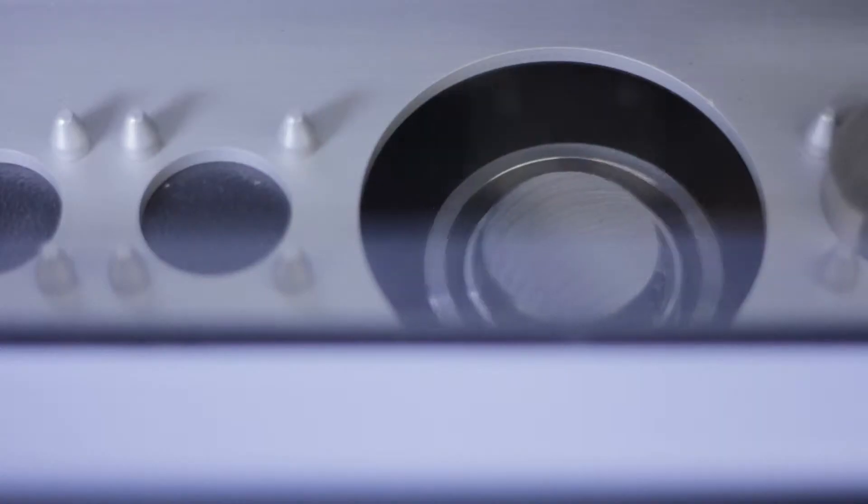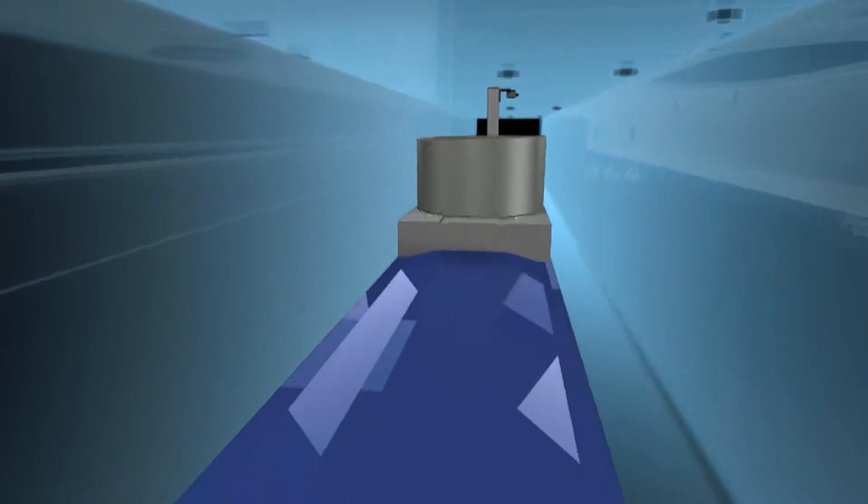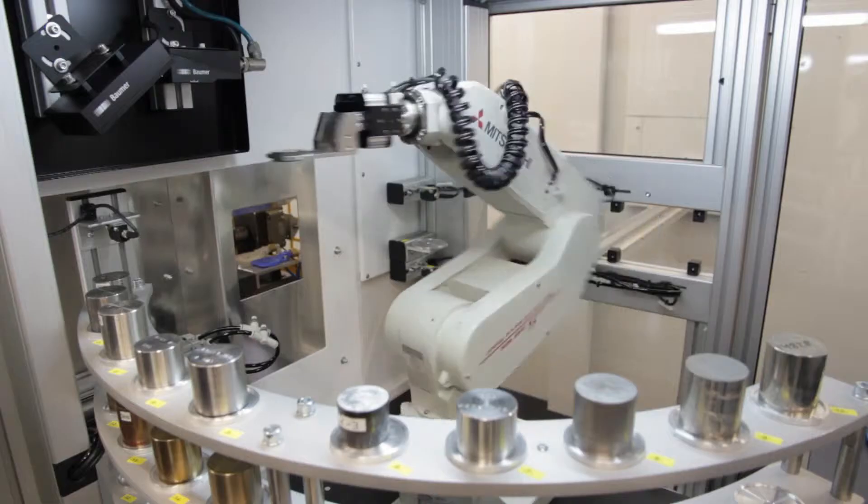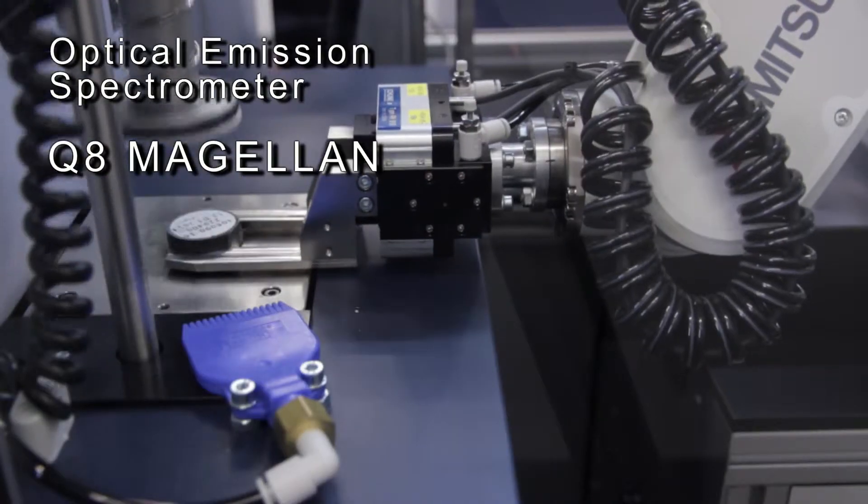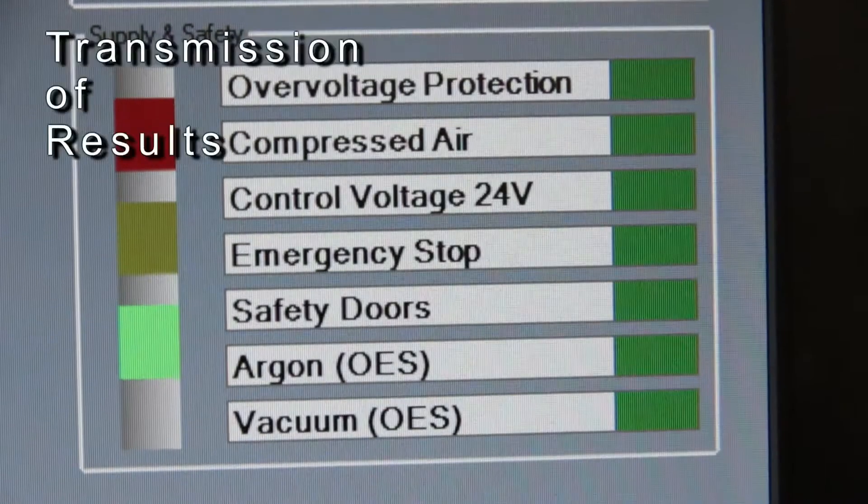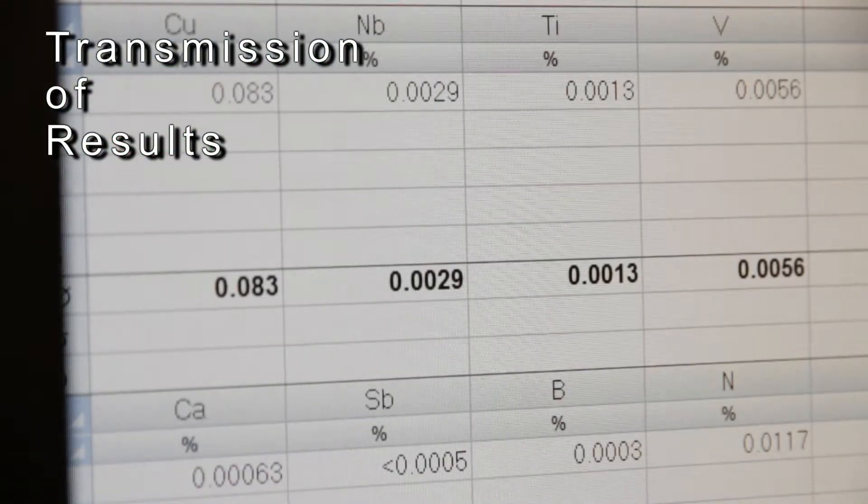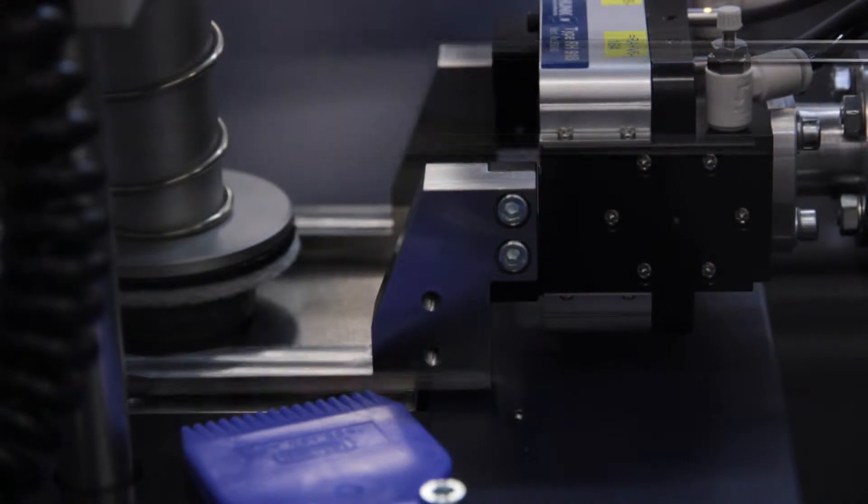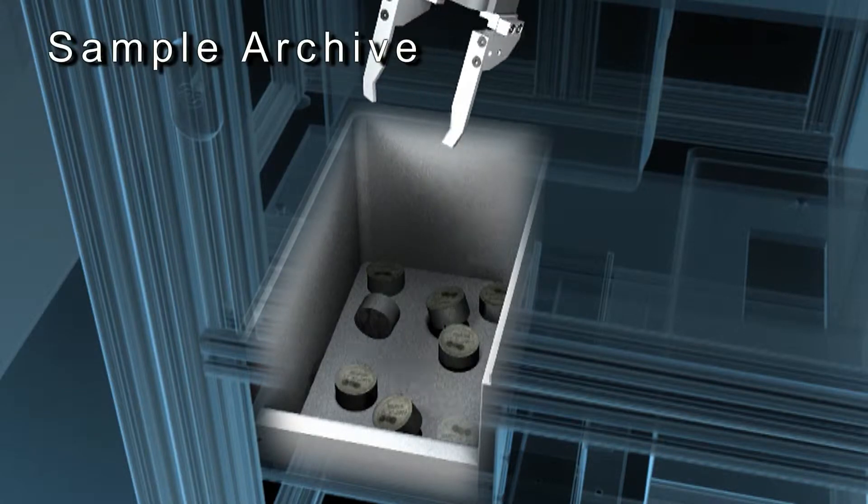The analysis results are sent to process control systems or output devices. Measured samples are dropped into archive boxes.